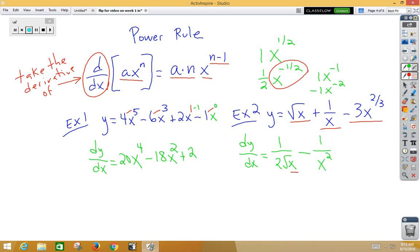Our third term, we multiply -3 times 2/3. The 3's would cancel out, giving us -2. x, 2/3 minus 1, would be -1/3. And we could write that as -2 over the cube root of x. Remember, a fractional exponent, the denominator is your index and the numerator is the exponent on the inside.